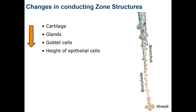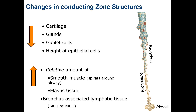Here's a quick review of the changes that occur as we progress deeper into the conducting zone. Cartilage, glands, and goblet cells decrease, as does the height of the epithelial cells. Conversely, the relative amount of smooth muscle and elastic tissue increases. One structure we haven't mentioned yet is BALT or MALT — bronchus-associated or mucosa-associated lymphatic tissue. Numerous lymphocytes are located within the lamina propria or among the epithelial cells, and lymphatic nodules may also be present. This tissue becomes relatively more abundant as bronchi become smaller and cartilage and other connective tissues are reduced.